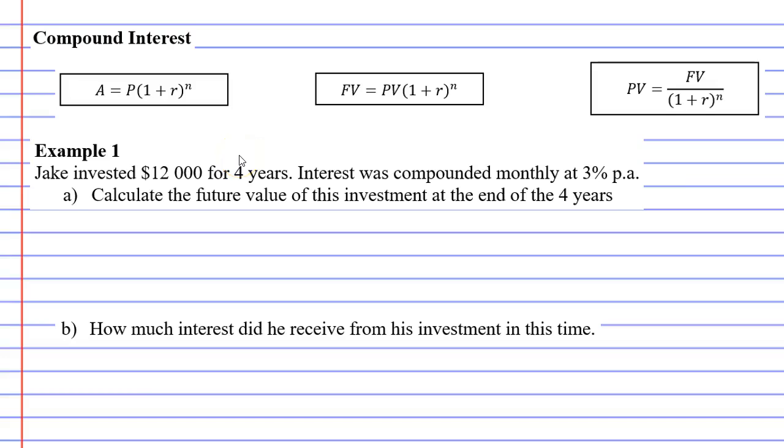In this video, we're going to look at example one. Jake has invested $12,000 for four years. Interest was compounded monthly at 3% per annum. For question A, calculate the future value of this investment at the end of the four years.